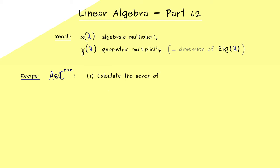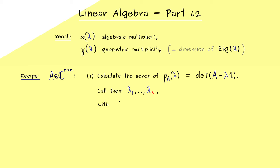The recipe essentially has two steps. The first step is calculating the zeros of the characteristic polynomial P_A, where P_A of lambda is given by the determinant of A minus lambda times the identity matrix. Since the degree of this polynomial is n, we find exactly n zeros, though some could coincide due to higher multiplicity. If we write down only the distinct ones, we have k eigenvalues where k is an integer less than or equal to n. We should also write down the algebraic multiplicities, and as a good check, their sum should equal n.